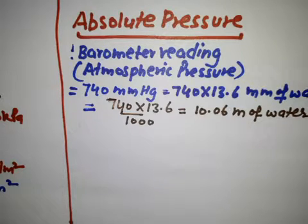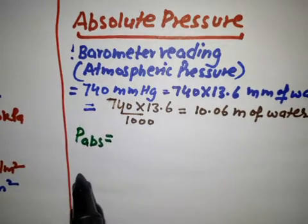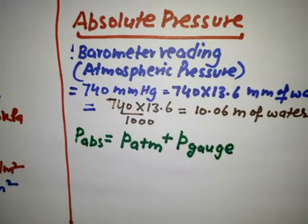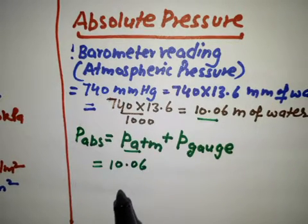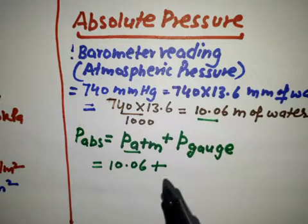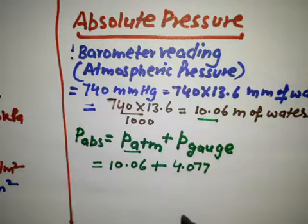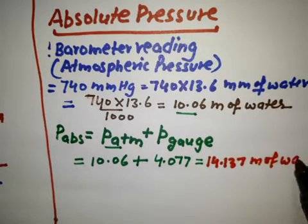Here we need to calculate P absolute from atmospheric and gauge pressure using the relation discussed in our previous videos. P absolute equals P atmospheric plus P gauge pressure. P atmospheric is 10.06 meter of water, and gauge pressure calculated in the last step is 4.077 meter of water. So the total comes to 14.137 meter of water.